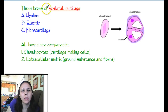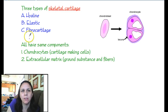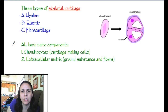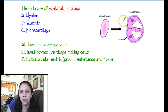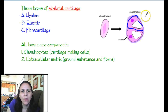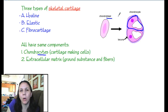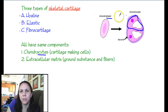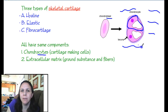There are three kinds of skeletal cartilage: hyaline, elastic, and fibro — the same ones we learned back in the tissue chapter. They all have the same components: chondrocytes, which are the mature cells (remember, 'cyte' means mature cell, 'blast' means a growing immature cell), and the extracellular matrix, which is all the non-living stuff around them, such as ground substance and fibers.